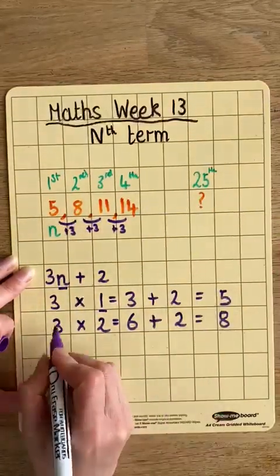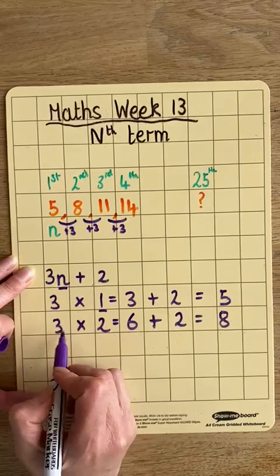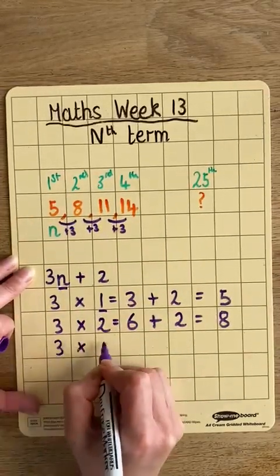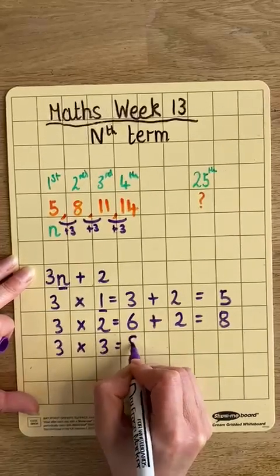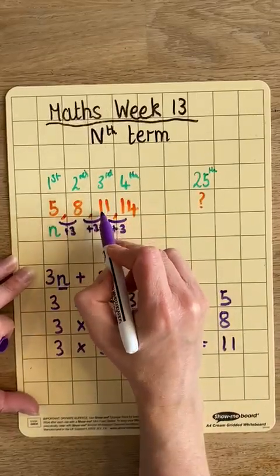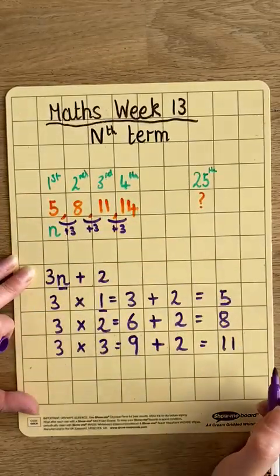Let's check it for the third. So 3n, or 3 times 3, third term, is 9, add 2, equals 11. And that is our third term. That's the value of our third term.